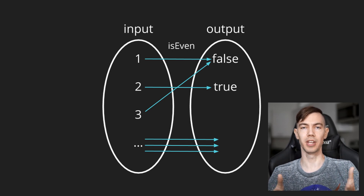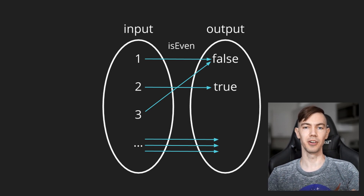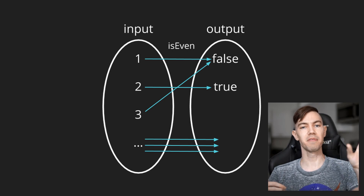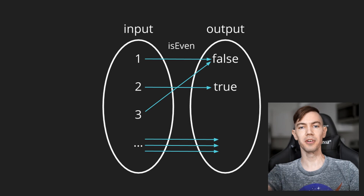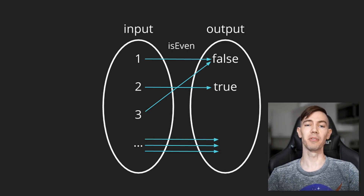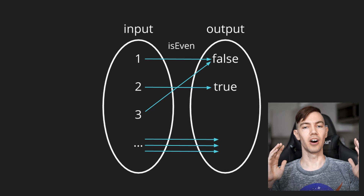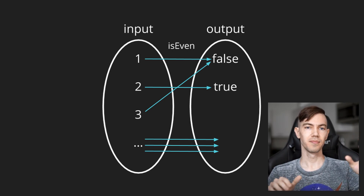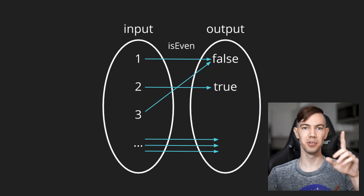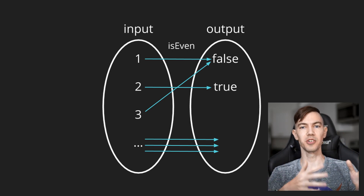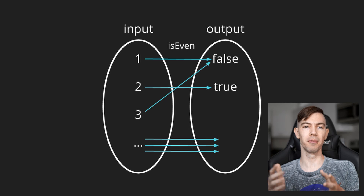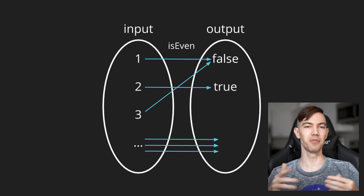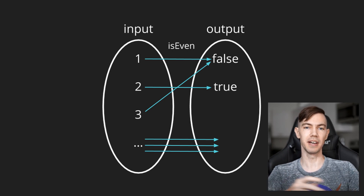The rules you need to follow in order to qualify as a function are: every value on the left, the inputs, needs to map to a single value on the right, the outputs. And the second rule is that all the values on the left need to have one of those mappings. The technical term for the first rule is a functional binary relation or right unique, and the formal name for the second rule is a serial relation or left total.